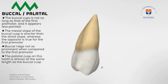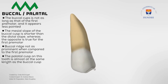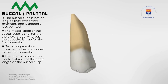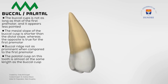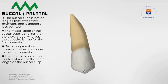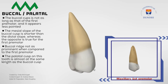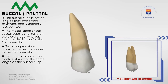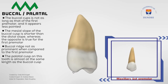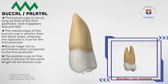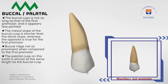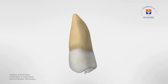The palatal cusp on this tooth is almost at the same length as the buccal cusp. So if you look at this tooth from the palatal view, you're not able to see much of the buccal cusp, whereas if you do the same for the first premolar, you are able to see parts of the buccal cusp, meaning the buccal cusp on that tooth is longer than the palatal cusp, whereas for this tooth they tend to be the same length.